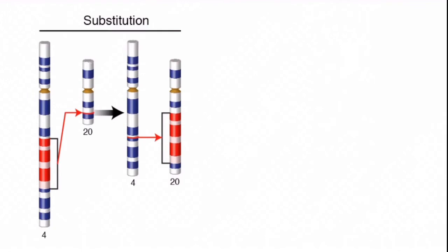In another case, substitution might occur. You see, part of the number 4 chromosome is attached to the number 20 chromosome. So a small part of the number 20 chromosome is substituted by a large part of chromosome 4.